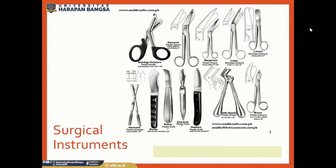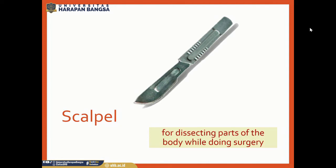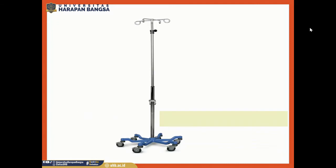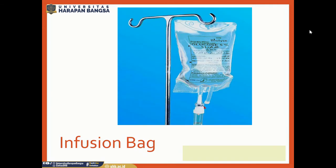These are surgical instruments. Surgical instruments are for doing surgery. This is a scalpel. Scalpel is for dissecting parts of the body while doing surgery. This is an IV pole. IV pole is for hanging the infusion bag. This is an infusion bag. Infusion bag is for storing infusion fluid.